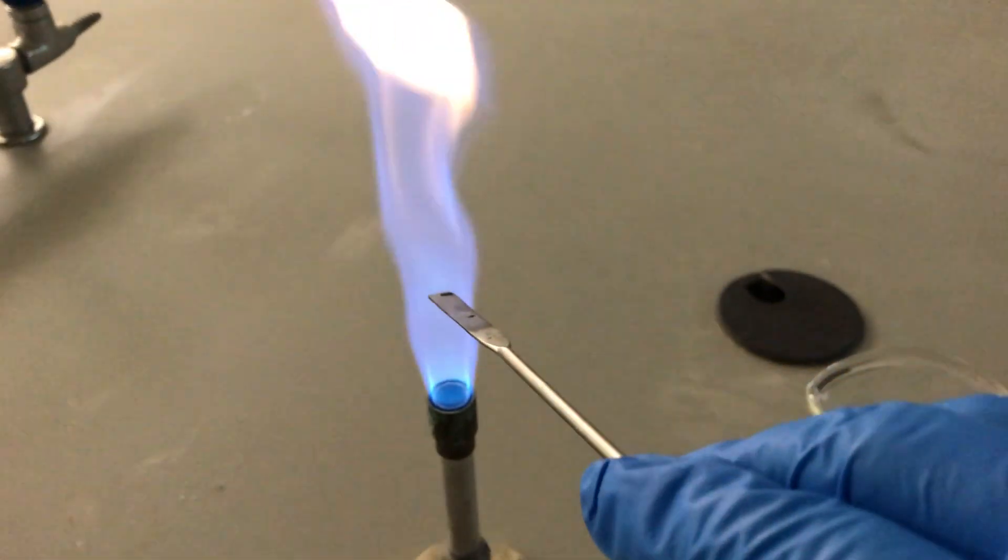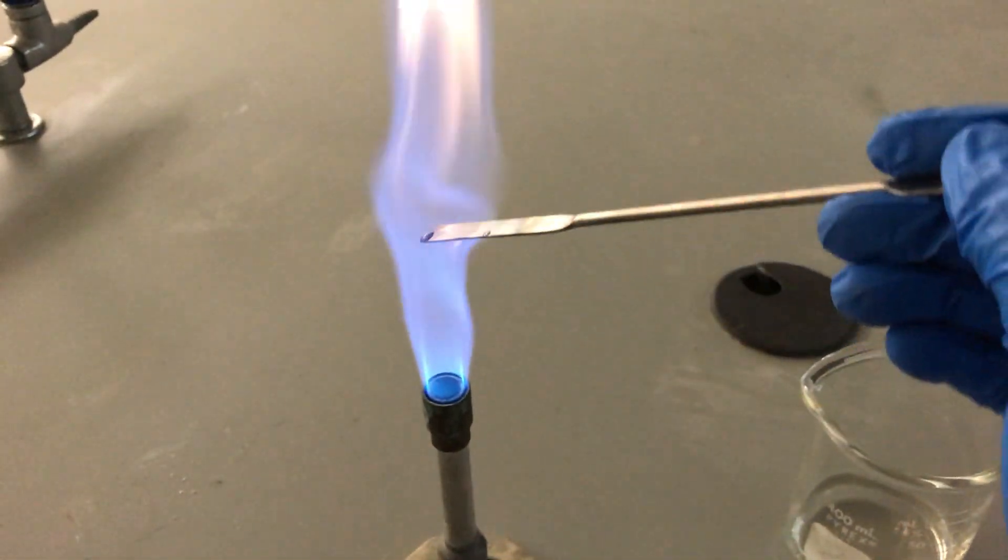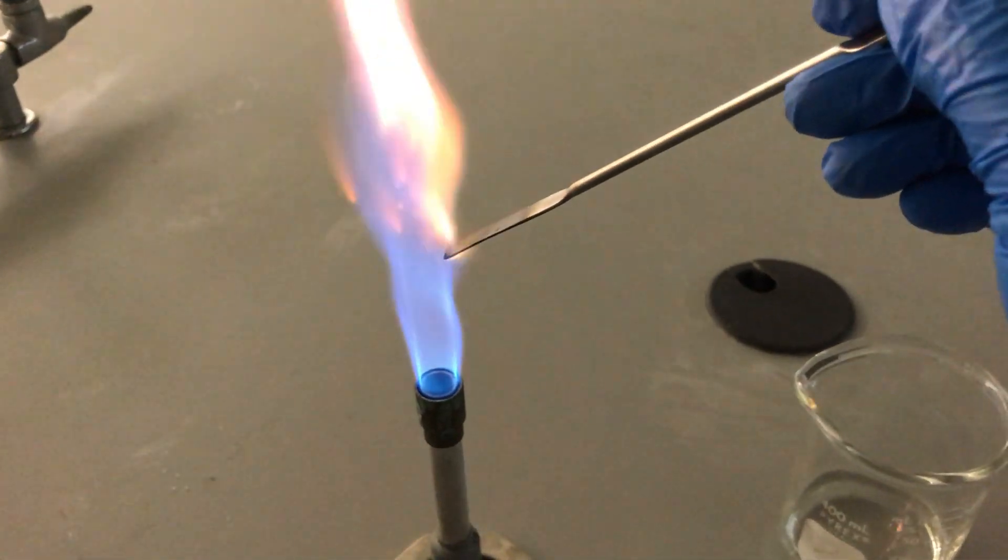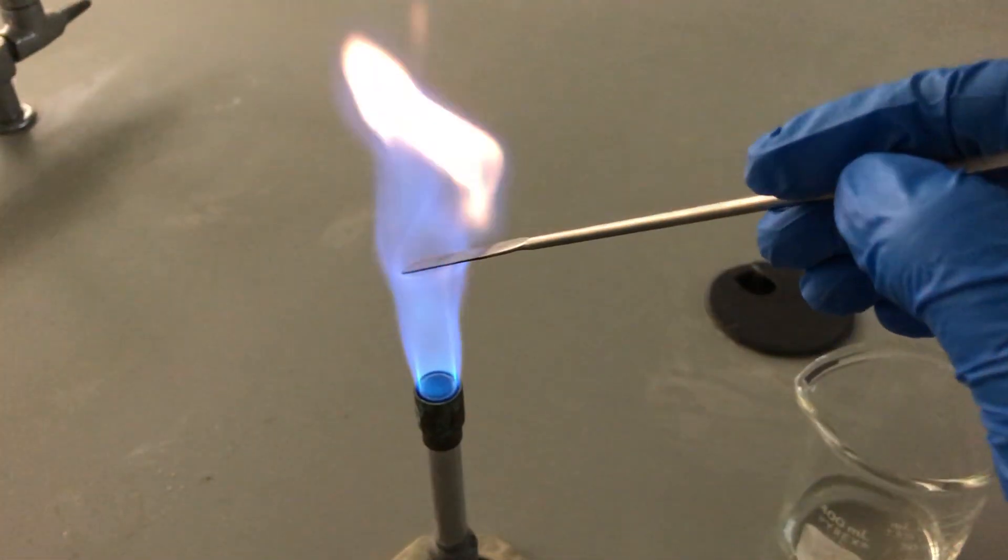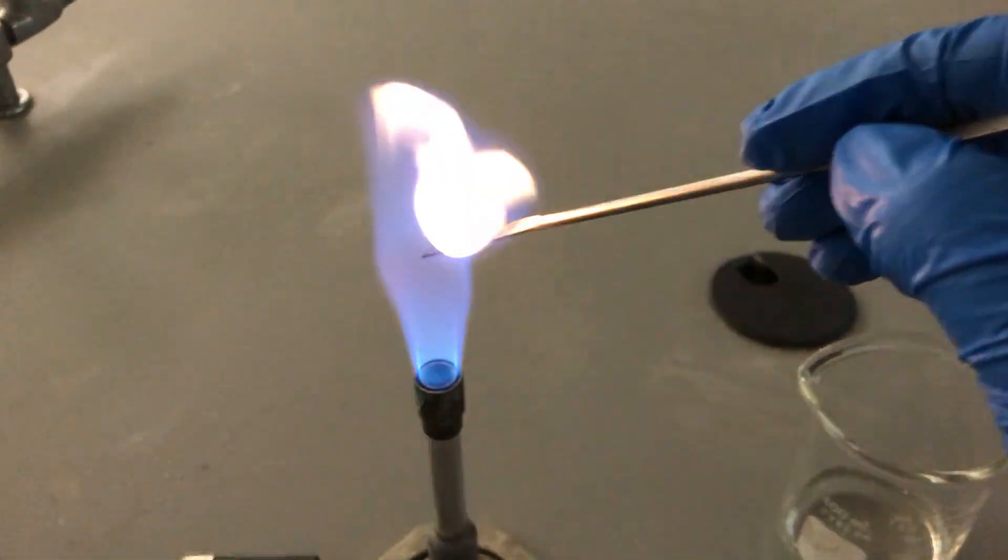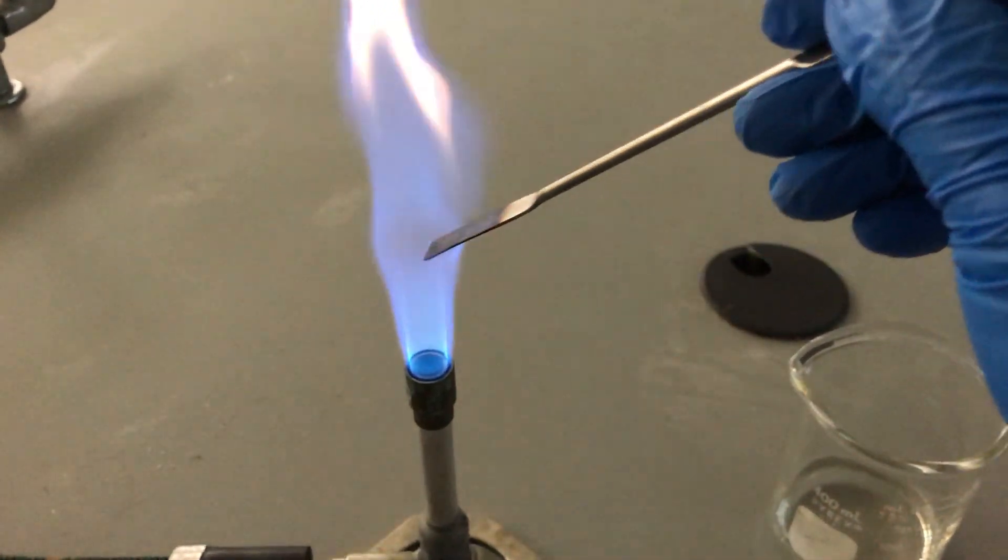So by doing this we make sure that any compounds that might be clinging to the spatula are removed. You can see it's kind of burning with some different colored flames, so that means we're removing some impurities and some contaminating compounds.